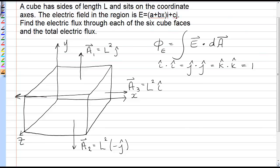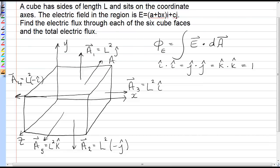A4 could be the left face, dimensions L squared, negative i-hat for the direction, and then we have the front face, we'll call that A5, which has direction k-hat, and the back face we'll call A6, which has direction negative k-hat.